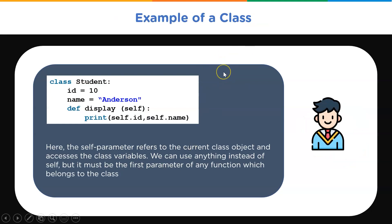Let's look at an example of a class in Python. We have created a class called Student with two variables: student ID and name. After that, we have created a function using the def keyword called 'display'. Inside the display function we use a parameter called 'self'. The self parameter refers to the current class object and accesses the class variables. We can use anything instead of self, but it must be the first parameter of any function which belongs to the class.